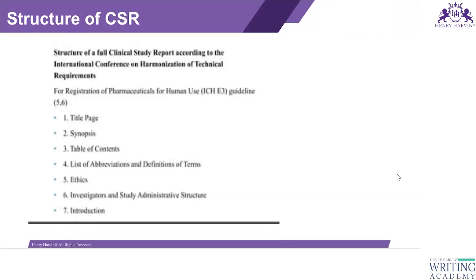The structure of a full CSR per ICH E3 guidelines begins with the title page, which includes the study title, protocol number, version number, name and address of the study site, sponsor, and CRO if involved, as well as the accurate start and end dates of patient recruitment. Next is the synopsis, which summarizes all significant findings from the start to the end of the clinical trial.